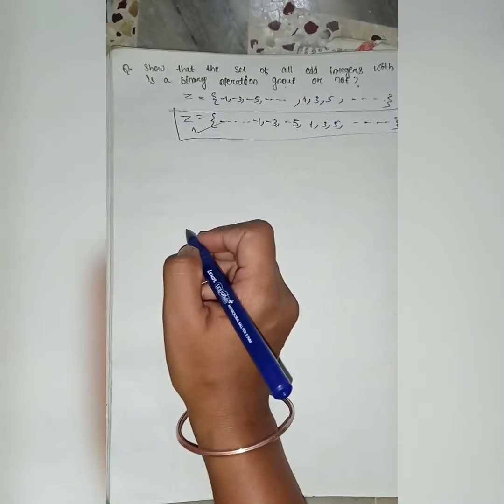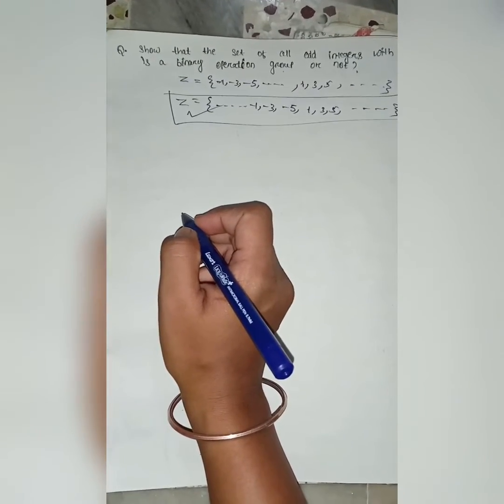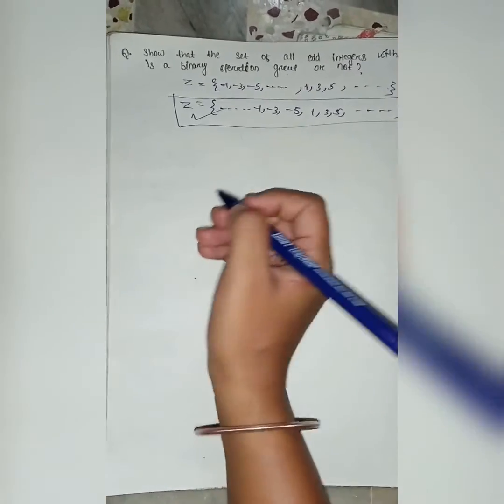So, for group I have to check closure, associative, identity and inverse.